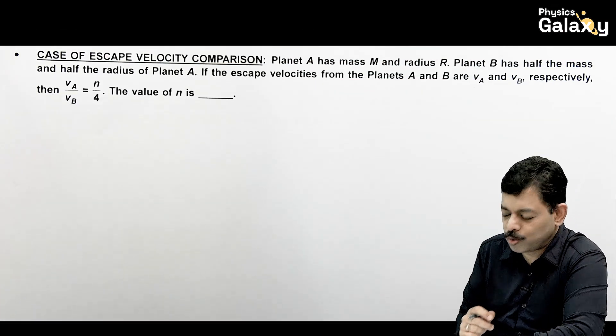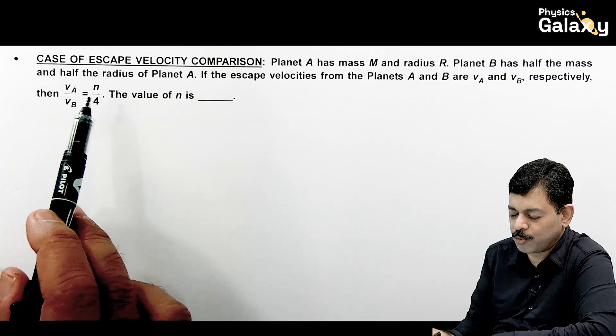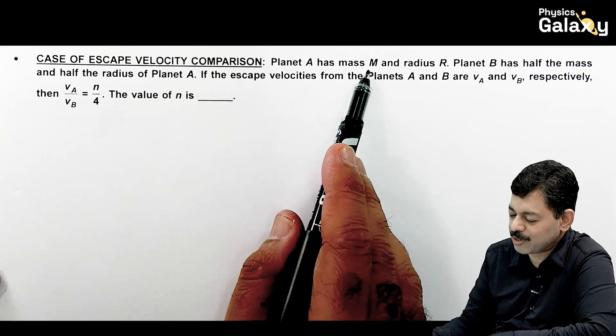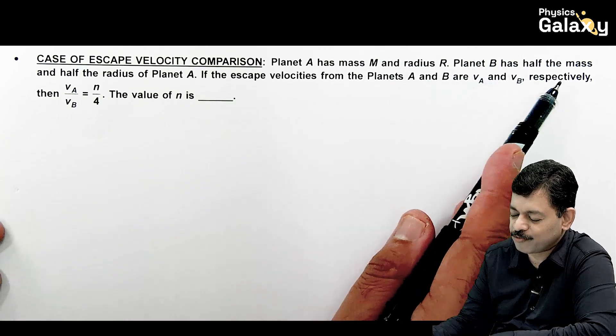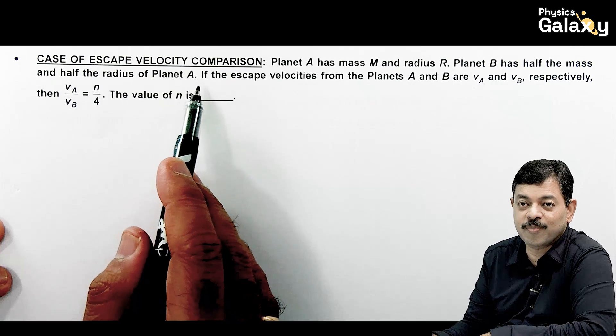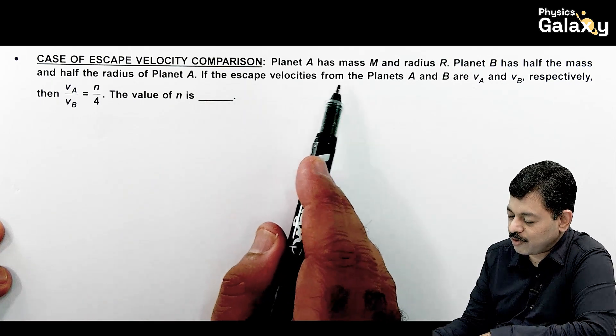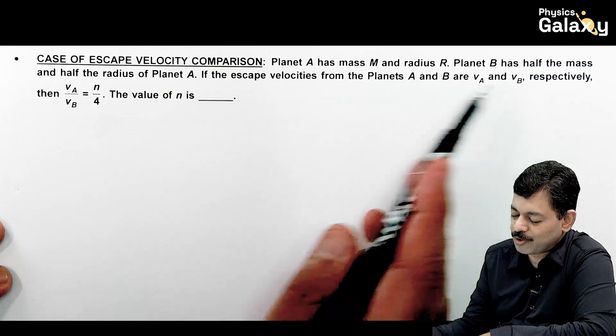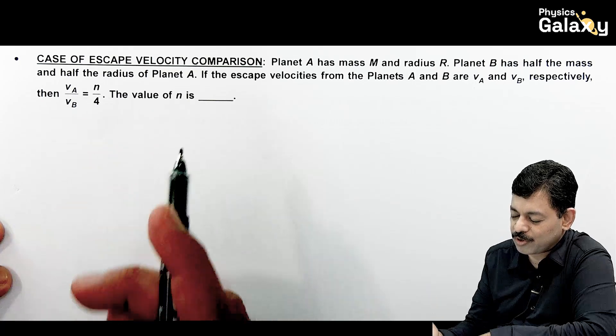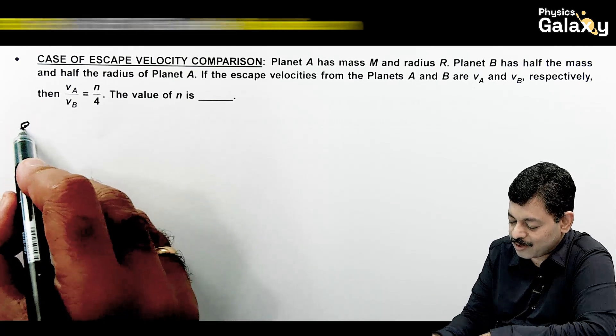Here we are going to talk about escape velocity comparison. Planet A has mass m and radius r. Planet B has half the mass and half the radius of planet A. If the escape velocities from planets A and B are va and vb respectively, what should be the value of n?